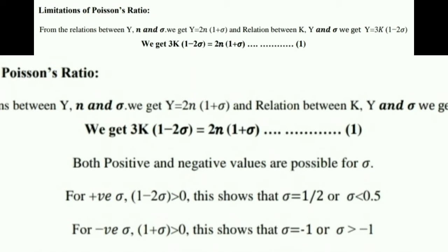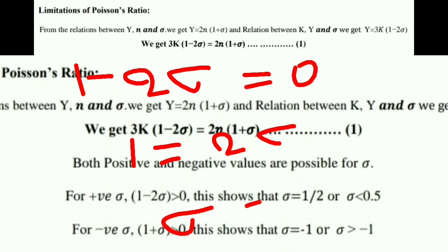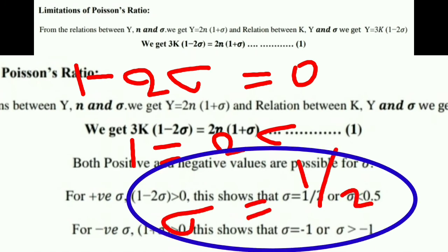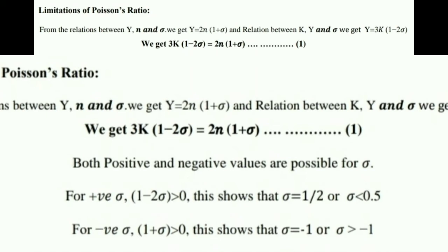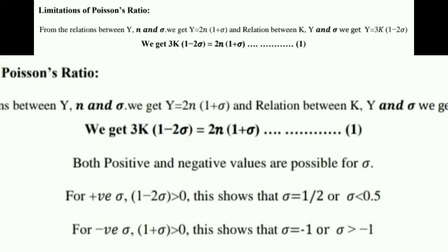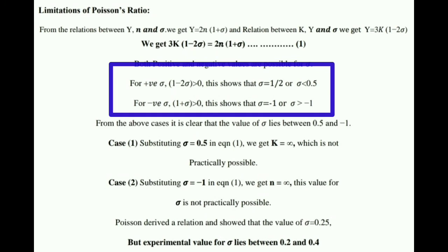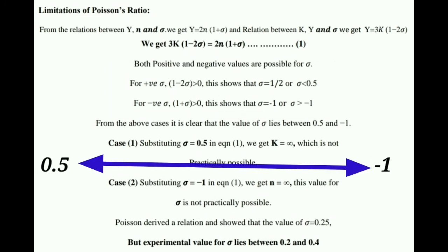To get a positive σ value, we use the left-hand side: setting 1 − 2σ = 0 gives σ = 1/2 = 0.5. To get a negative σ value, we use the right-hand side: setting 1 + σ = 0 gives σ = −1. So from the equation, σ lies between −1 and 0.5.